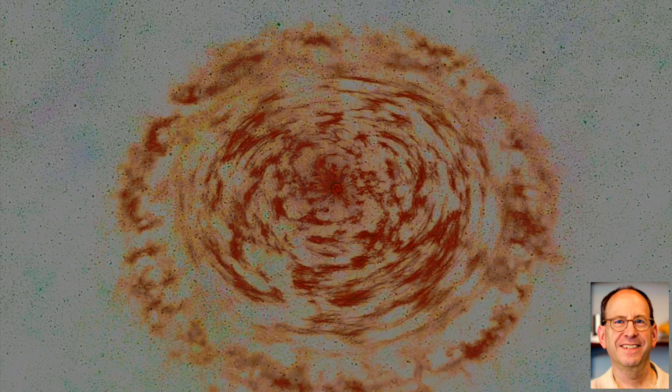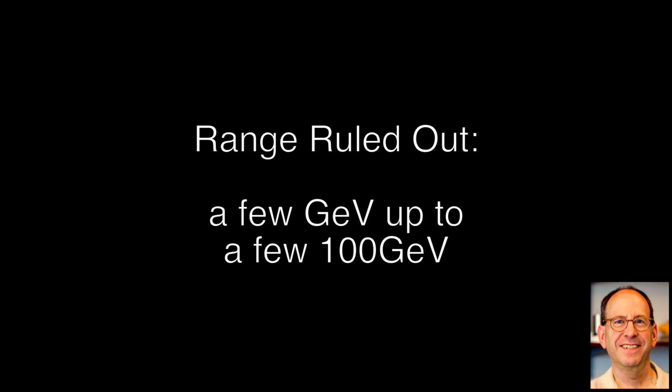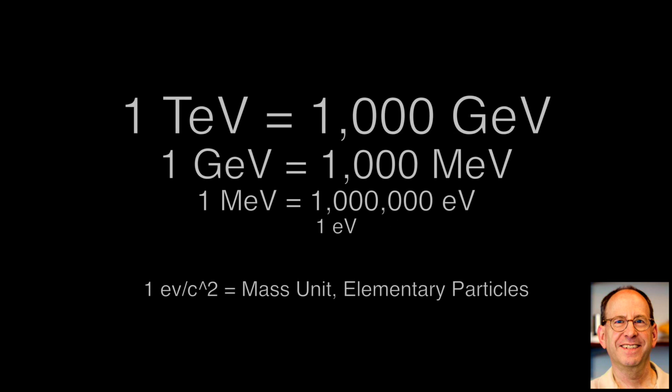What's been ruled out is mass ranges that go from, say, a few GeV, GeV over C squared, that is a few times the mass of the proton, up to a few hundred. And so that's where the experiments are the most sensitive.